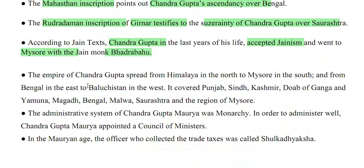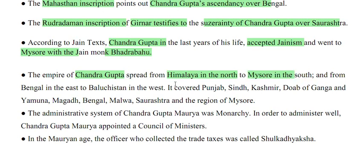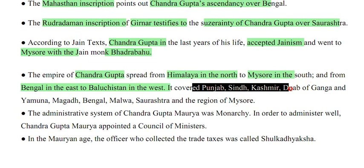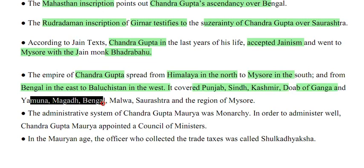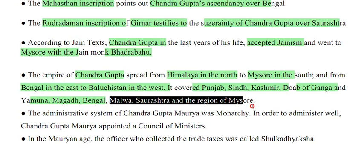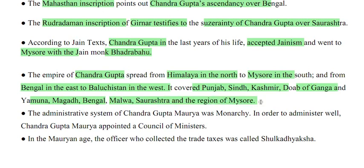The empire of Chandragupta spread from the Himalaya in the north to Mysore in the south, and from Bengal in the east to Baluchistan in the west. It covered Punjab, Sindh, Kashmir, the Doab of Ganga-Yamuna, Magadh, Bengal, Malwa, Saurashtra and the region of Mysore. The administrative system of Chandragupta Maurya was monarchy.